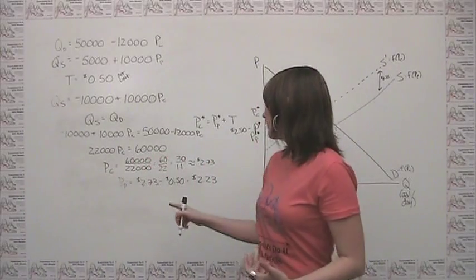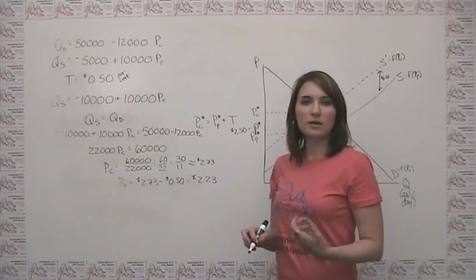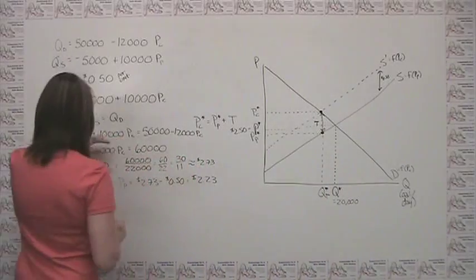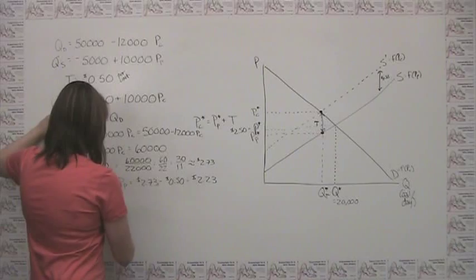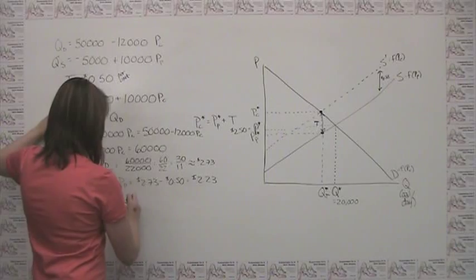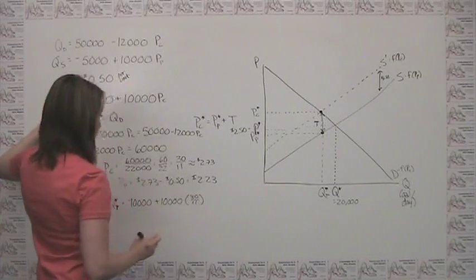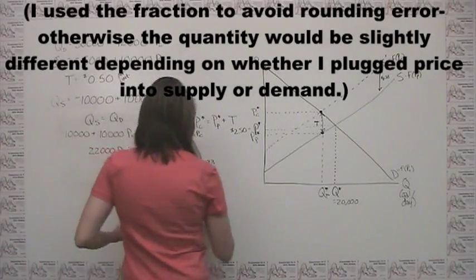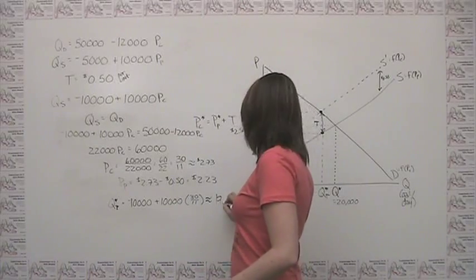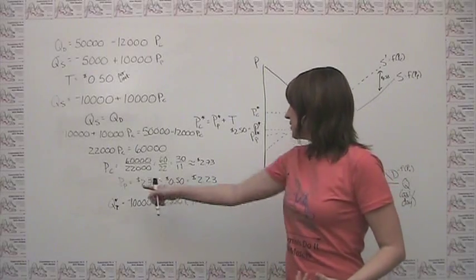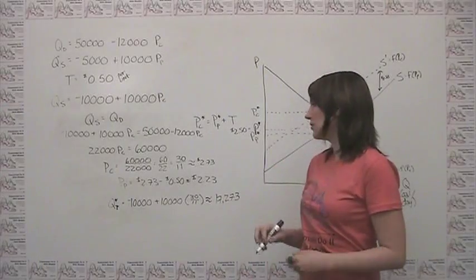Finally, we solve for the equilibrium quantity with the tax by plugging the consumer's price into either equation. Using the new supply curve: Q = negative 10,000 plus 10,000 times (30/11), which is approximately 17,273. The producer's price, to some rounding, is approximately $2.23. So after the tax, the consumer pays about $2.73, the producer receives about $2.23, and the equilibrium quantity falls to approximately 17,273.